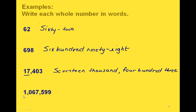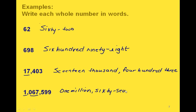Then the number that's in our next period is 403. And last of all, this time we have a number that's in the millions period — the one. So we would start out with 1 million. Then our next period is the thousands period, and we only have a 67 there, so we would have 1,067,000. And the number that's in our last period is 599.